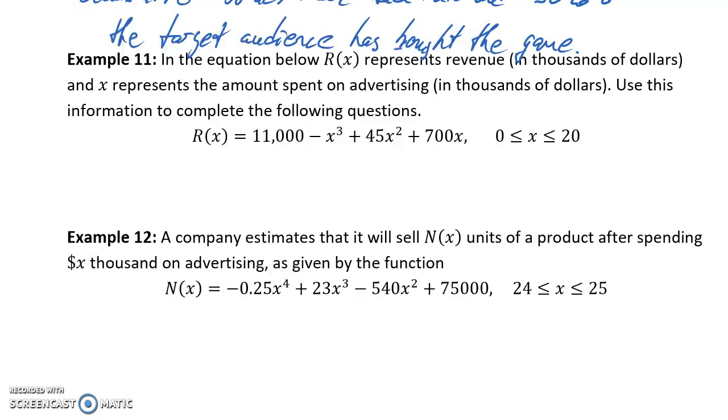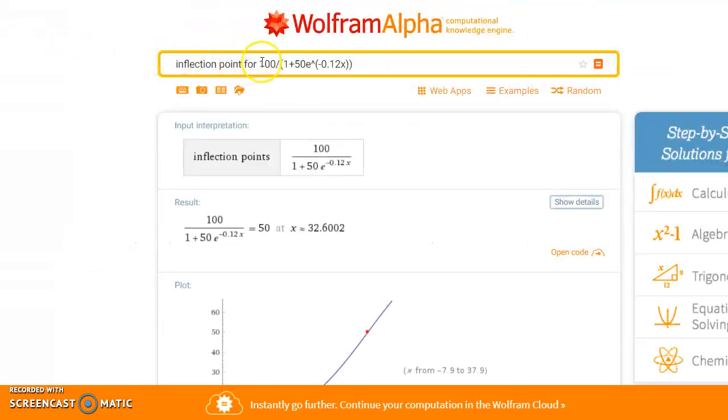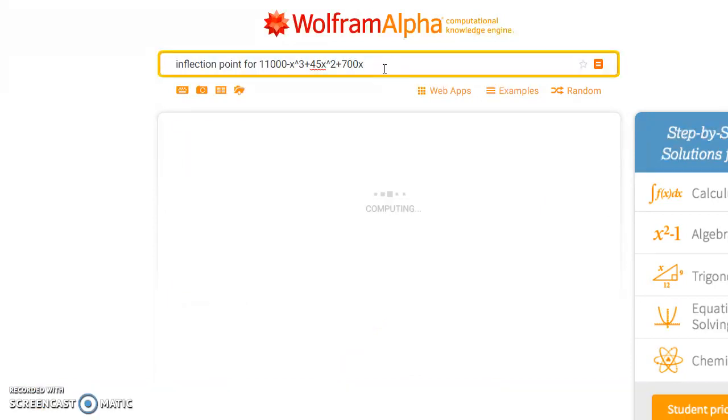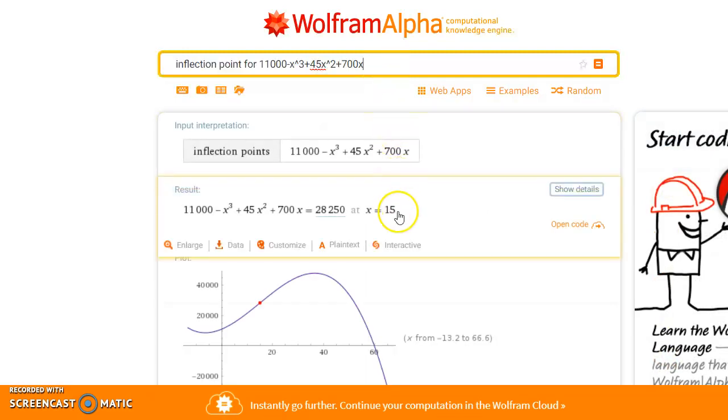Similarly, in example 11, we could find the point of diminishing returns for this given function. So we could ask Wolfram Alpha to find that inflection point for 11,000 minus x cubed plus 45x squared plus 700x. We would generate an inflection point at x equals 15, and the value of our function at x equals 15 would be 28,250.